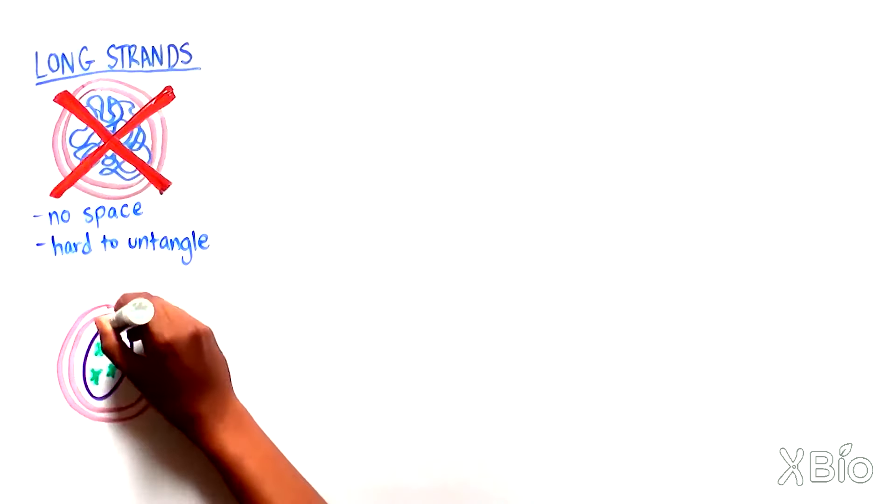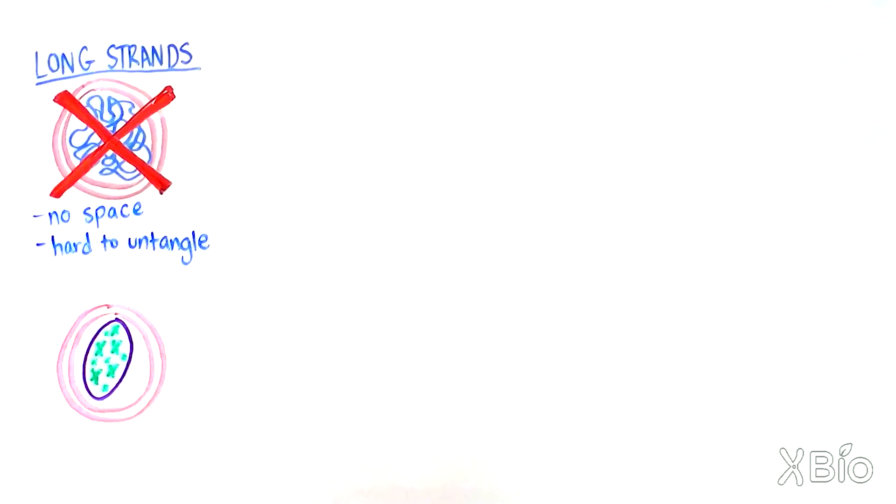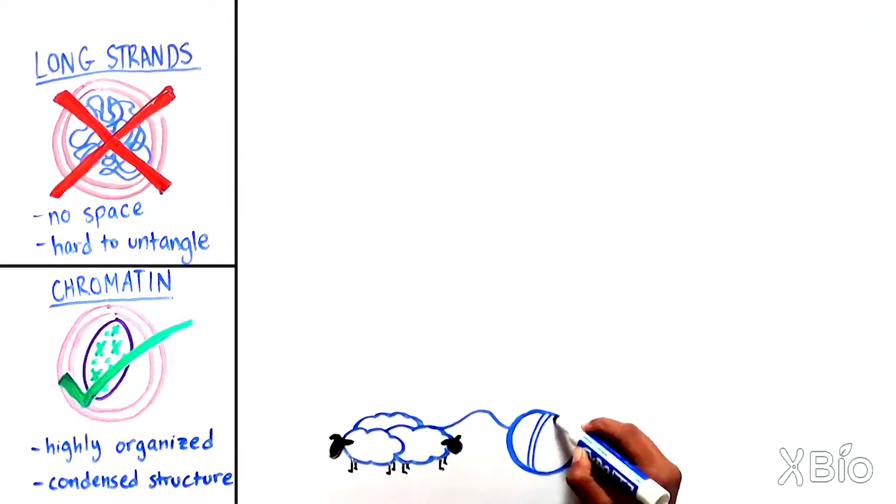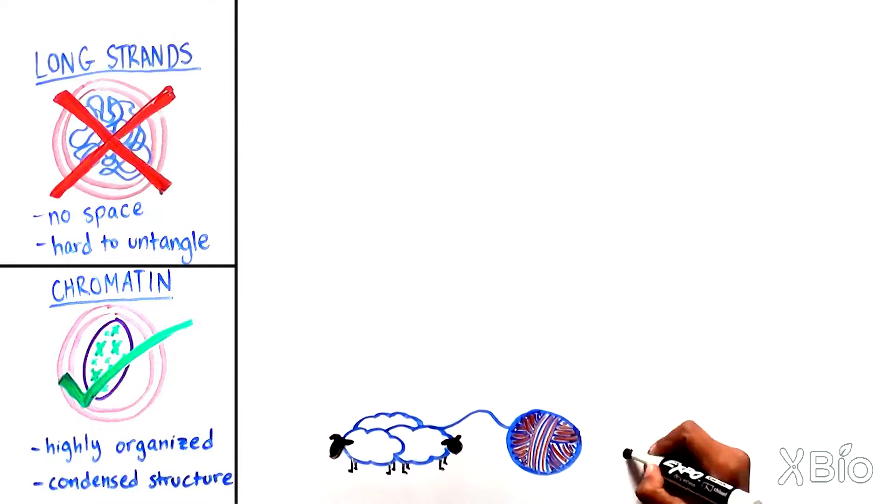the information is coiled up around a series of proteins into a highly organized, condensed structure called chromatin. As you'll see, it's similar to the process of turning wool into a knitted sweater, where each piece provides structure and organization to the next. Let's explore this concept a bit more.